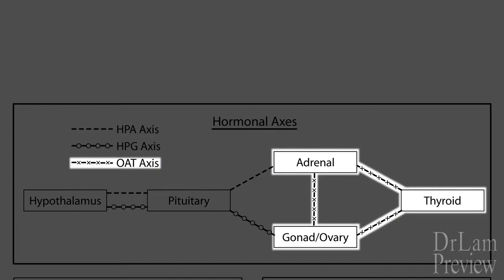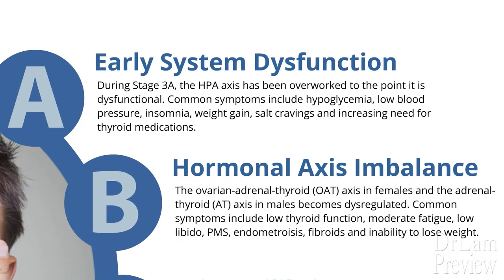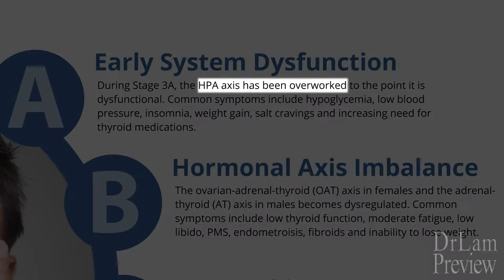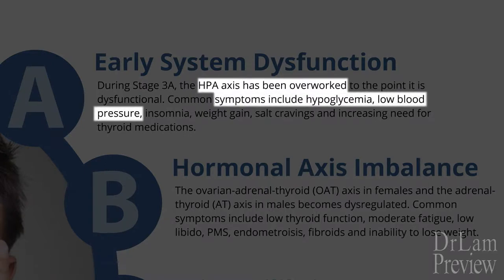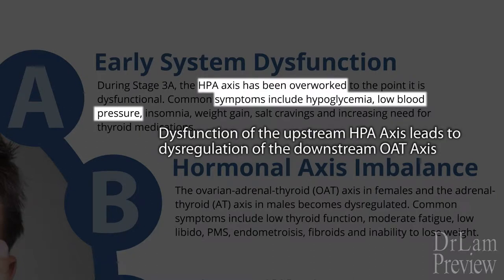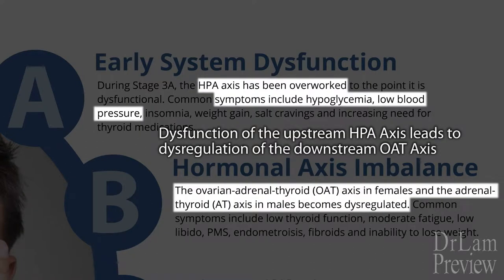The OAT axis governs the function between the ovarian system, the adrenal system, as well as the thyroid — that's why it's called the OAT axis, as you can see from this diagram here. In stage 3b, as HPA dysregulation occurs in 3a, leading to hypoglycemia, low blood pressure, and a slight catabolic state, the downstream hormonal axis becomes further dysregulated in women, while in men it will have the dysregulation of the AT axis.